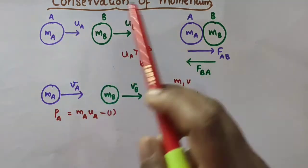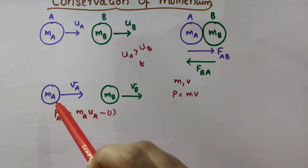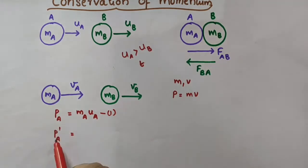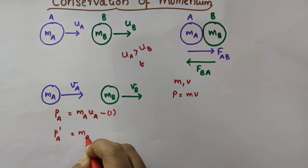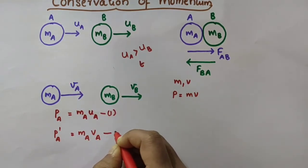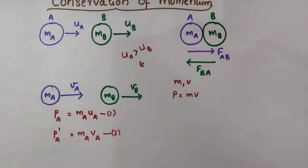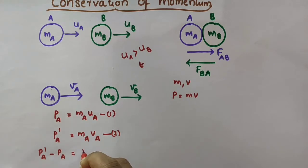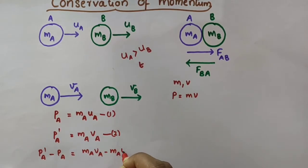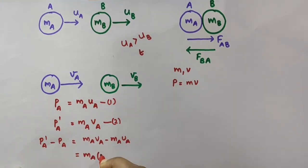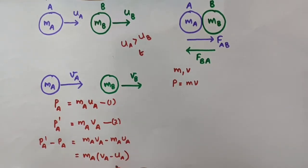Now what about the momentum of ball A after the collision? I am taking that as PA dash. PA dash equals the mass of ball A times the velocity of ball A after the collision: PA' = MA × VA. So the change of momentum of ball A is final momentum minus initial momentum: MAVA − MAUA, which can be written as MA(VA − UA).